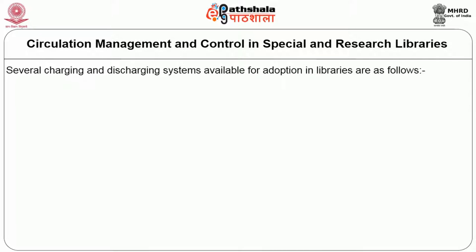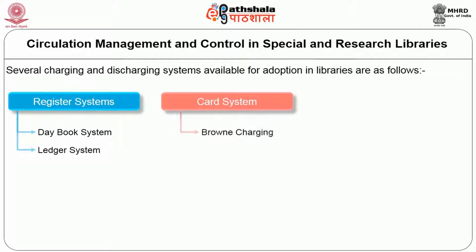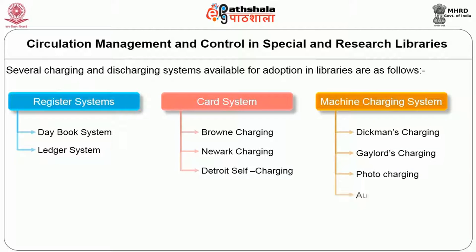Several charging and discharging systems available for adoption in libraries include: register systems like the day book system and ledger system; card systems like the Brownie charging system and New York charging system; the Detroit self-charging system; machine charging systems like Dickman's charging system, Gaylord charging system, photocopying charging system, audio charging system; and computer-based charging systems.